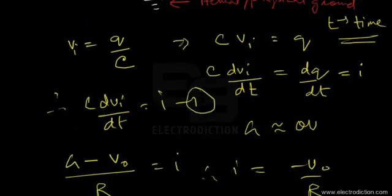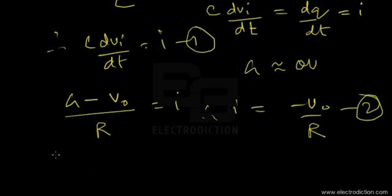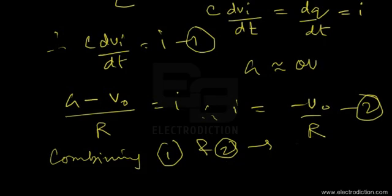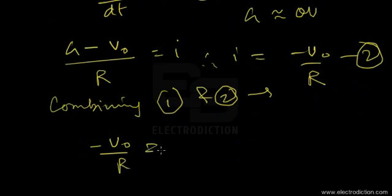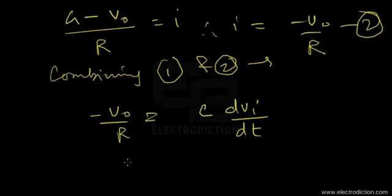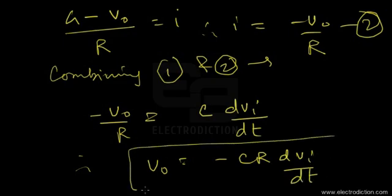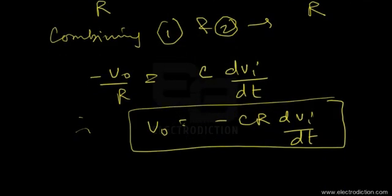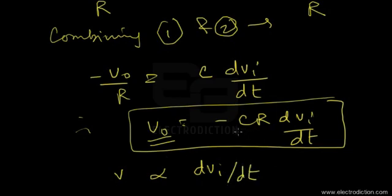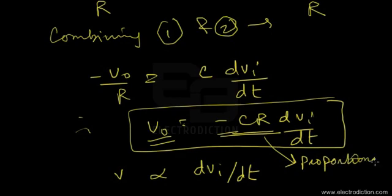Combining equations one and two: −VO/R = C·dVI/dt. Rearranging, we get VO = −CR·dVI/dt. This is the equation we've been looking for. As you can see, the output voltage is directly proportional to the derivative of the input voltage, where −CR is the proportionality factor.